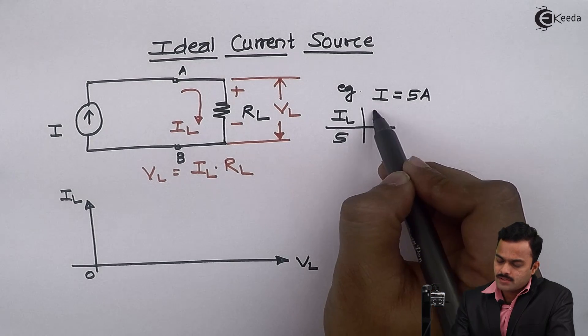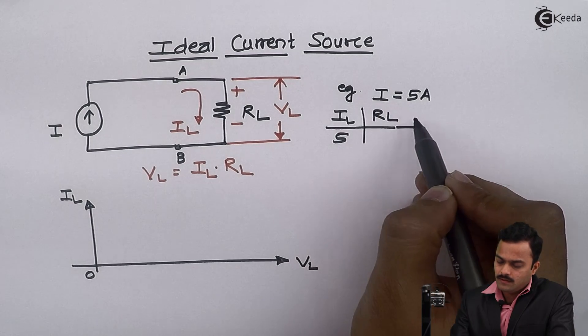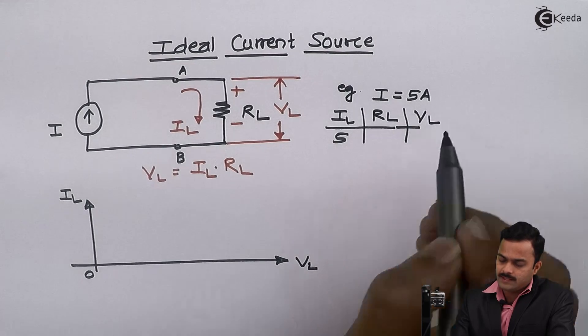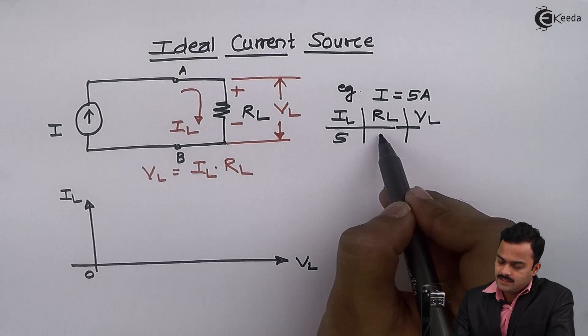So I will consider IL as 5 ampere, same as the value of I. And based on the value of RL and using this equation I will get VL.